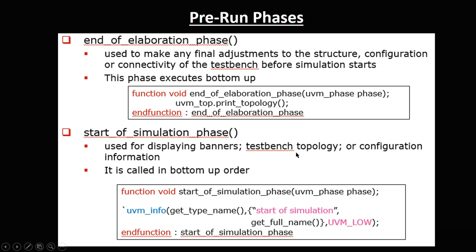After build and connect, end of elaboration and start of simulation follow. End of elaboration is very short and is used for final topology adjustments. Start of simulation syntax includes uvm_info to print the full hierarchy — for example, get_full_name() to verify the complete component hierarchy including test, environment, and agents.